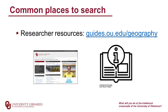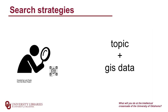So if none of the data sources listed at guides.ou.edu/geography have what you need, let's start with some strategies to continue searching. First, what I like to do is go to the search engine of my choice and put in the topic as well as GIS data. Spatial data sometimes gets what you need, but I find GIS data is more likely to take you to an actual data source.